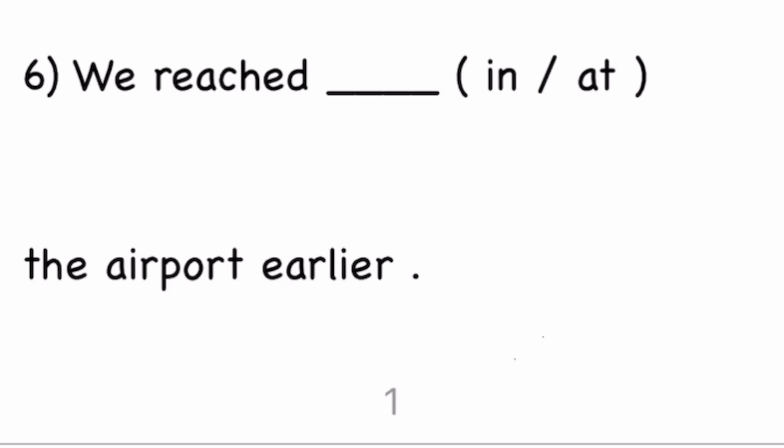Next question is: we reached in or at the airport earlier? So here also, in means inside the building of the airport. At means you reached the area of the airport. The correct option is, we reached at the airport earlier itself. The person is trying to convey the message that he has reached the premises of the airport. Not inside the building or inside the terminal of the airport. I hope you understood. The correct option is at. We reached at the airport earlier itself.